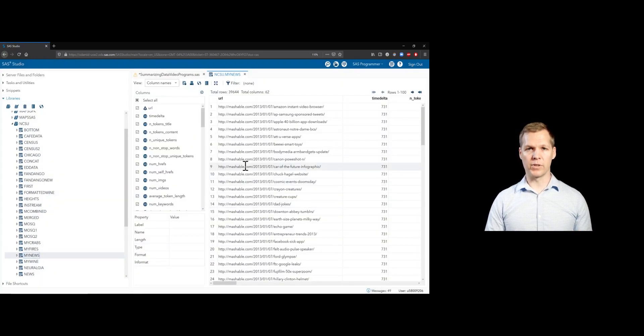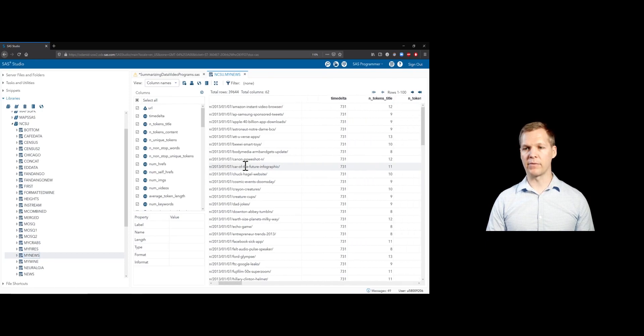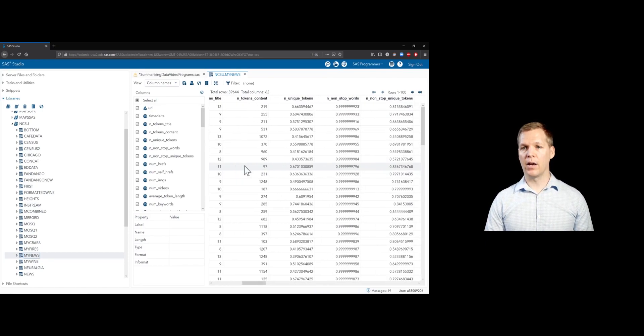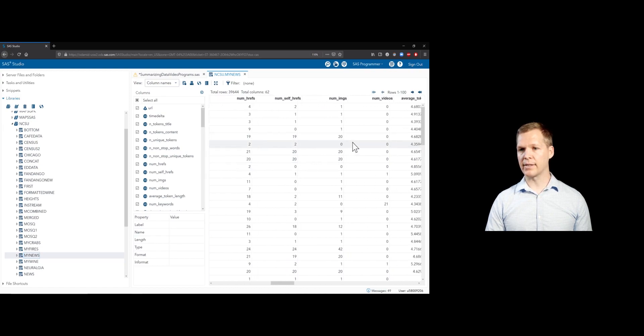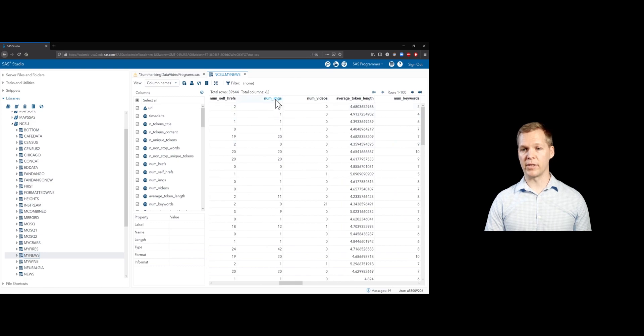We'll use that same online news data set that we read in before. We had that shares variable that was sort of our response variable, looking at the number of times the articles were shared. We need another numeric variable to deal with. And so just glancing through here, maybe we could look at something like the number of images in the file, so in the actual article.